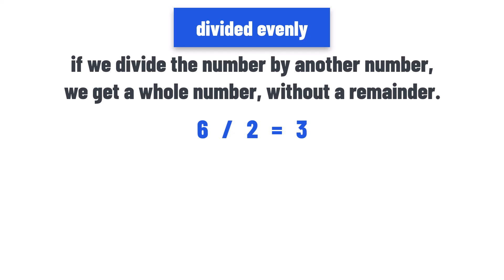So, 3 is a whole number without a point. This means 6 can be divided evenly by 2. But 5 divided by 2 is 2.5.